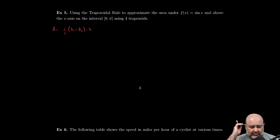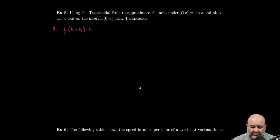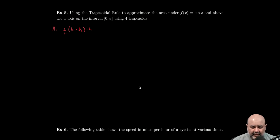Let's see, so we have, using the trapezoidal rule, approximate the area f(x) equals sin x above the x-axis on the interval 0 to π using four trapezoids.